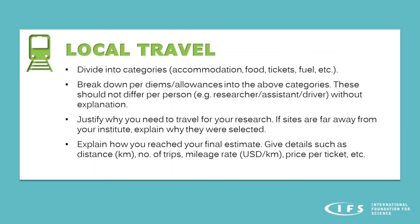IFS can support travel for your research as long as it is local. Divide this into categories such as accommodation, food, tickets, and fuel. Many applicants request per diems or allowances, but these should be broken down into actual costs. IFS cannot accept per diems that differ per person — for example, different rates for researcher, assistant, or driver. As only actual costs are covered, if the cost covers the same food, accommodation, or travel for each person, it should be the same for everyone. Justify why you need travel for your research, and if sites are far from your institute, explain why they were selected. Give details such as distance, number of trips, mileage rate, and price per ticket so reviewers can understand how you calculated your total.